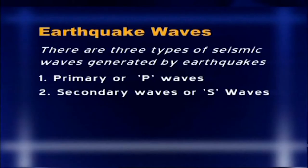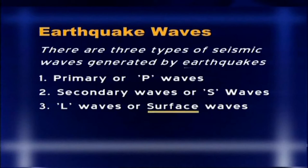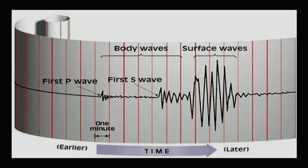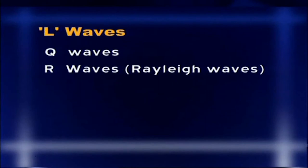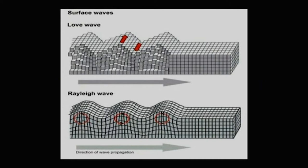The third type are L waves, also known as surface waves. L waves have long wavelength, low frequency, and are confined to the outermost skin of the earth's crust, thereby causing most of the structural damage from earthquakes. These are further subdivided into Q waves, in which there is strong horizontal motion perpendicular to the direction of wave propagation, and R waves or Rayleigh waves, in which there is strong vertical motion at right angles to the direction of wave propagation.